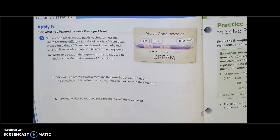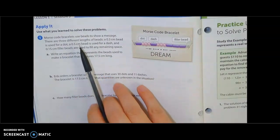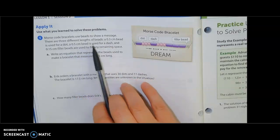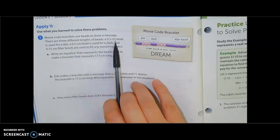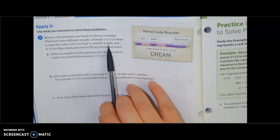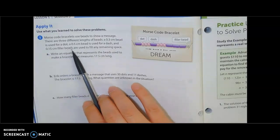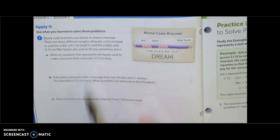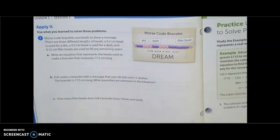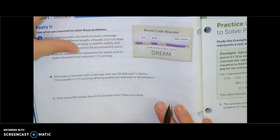Welcome back 8th grade. So now we're looking at some examples. When we read number 5, it says Morse code bracelets use beads to show a message. There are three different lengths of beads: a 0.3 cm bead is used for a dot, a 0.5 cm is used for a dash, and a 0.15 cm filler beads are used to fill any remaining space. Part A says write an equation that represents the beads used to make a bracelet that measures 17.5 cm long.